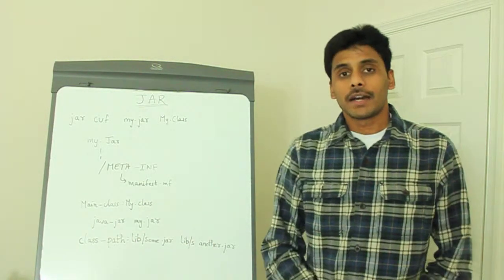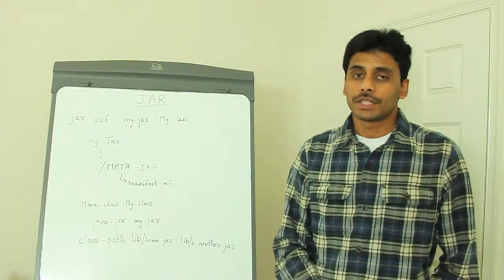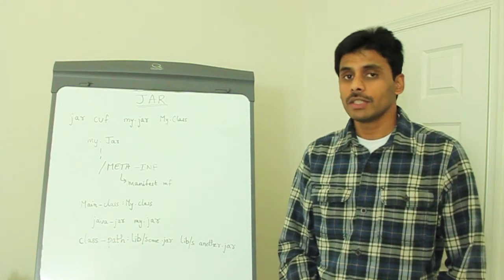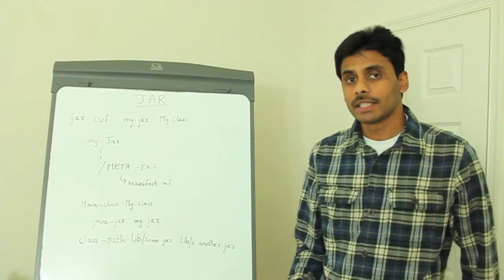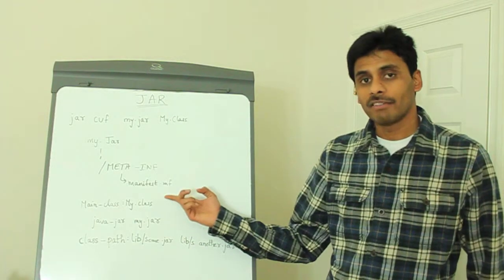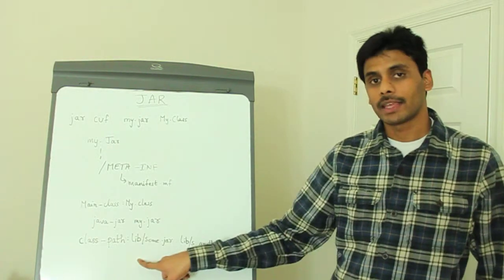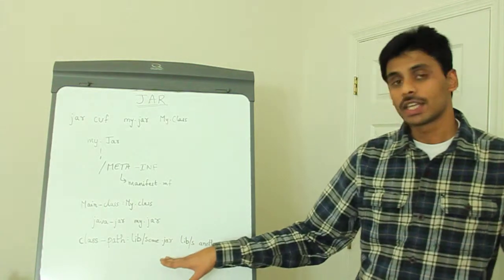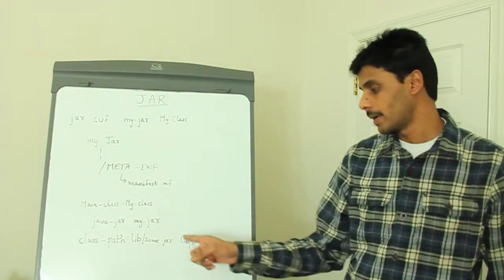If our JAR depends on other classes from other JAR files to perform its function, then we can add these dependencies to the manifest.mf using the class-path attribute and listing all the dependencies separated by space.